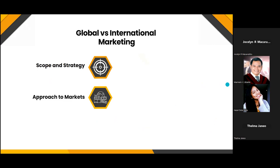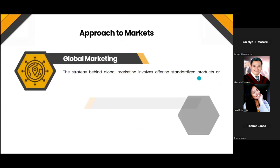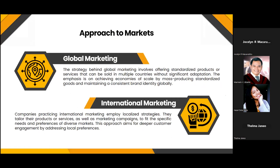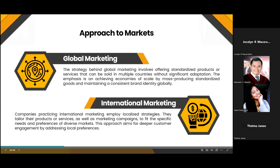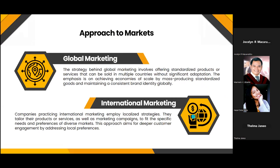The next difference is their approach to markets. In global marketing, the focus is on standardizing products and marketing strategies across different markets, with emphasis on consistency and uniformity in branding, product offerings, and promotional activities. While in international marketing, products and marketing strategies are adapted to fit the preferences, cultures, and demands of different local markets, involving tailoring products, promotional efforts, and distribution methods to suit specific regional needs.